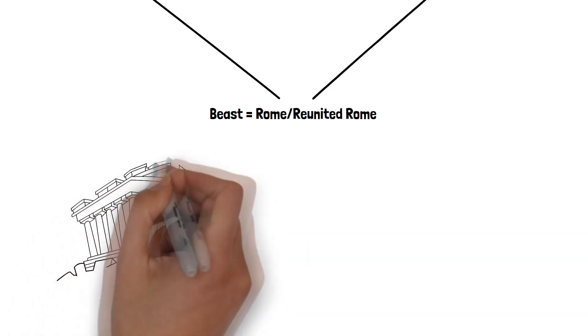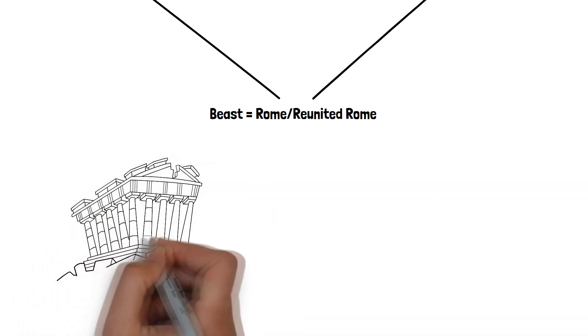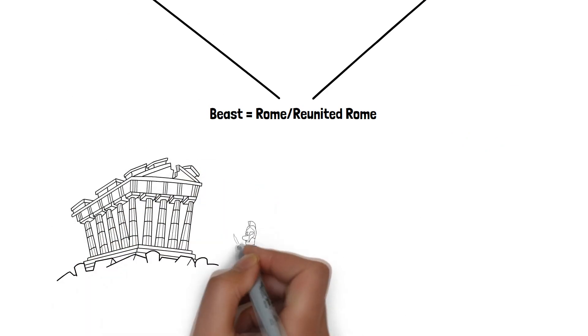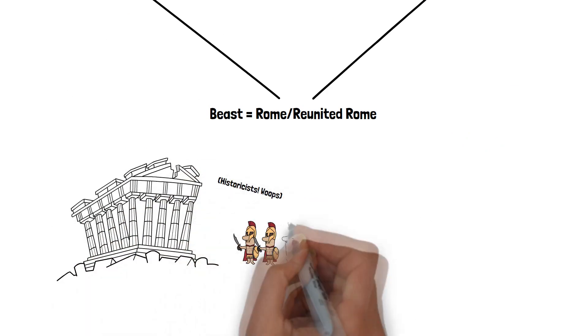For historicists, this tends to be because they see much of the Book of Revelation as being fulfilled around the year 70 AD, when Jerusalem was destroyed.